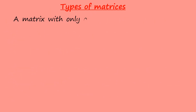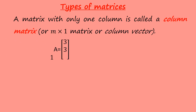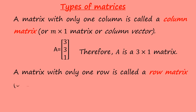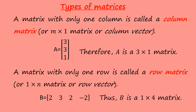Now we start with the types of matrices. A matrix with only one column is called a column matrix, or m by 1 matrix, or column vector. For example, this is a 3 by 1 matrix. A matrix with only one row is called a row matrix, or 1 by n matrix, or row vector. For example, this is a 1 by 4 matrix.